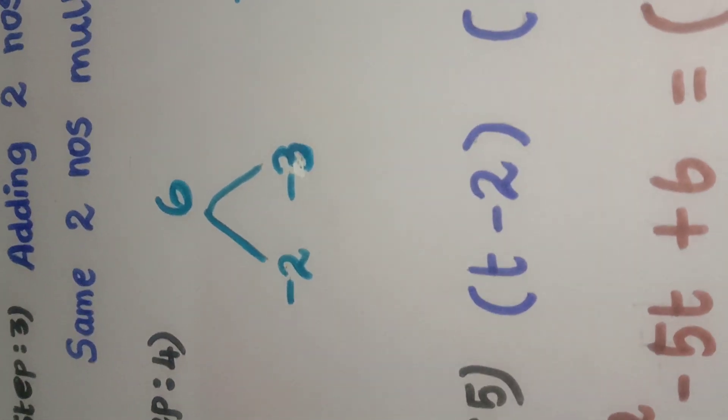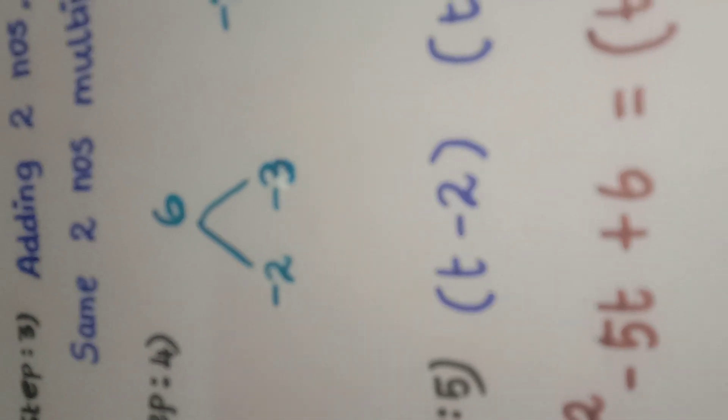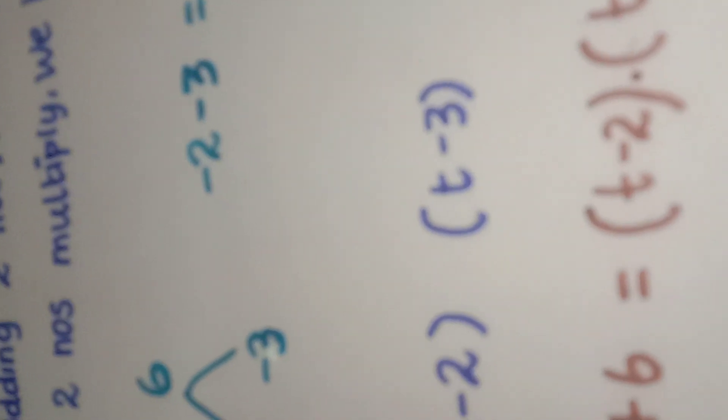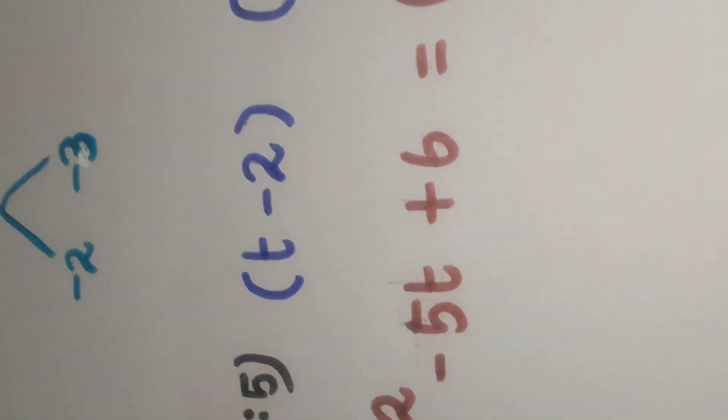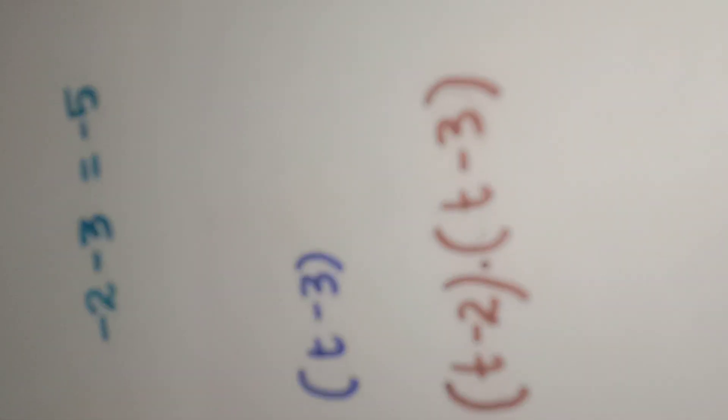Now this can be written as t minus 2 into t minus 3. This is nothing but t squared minus 5t plus 6 equal to t minus 2 into t minus 3.